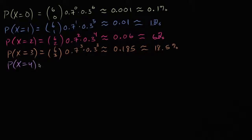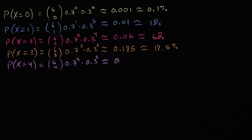The probability that our random variable is equal to four is going to be six choose four, times 0.7 to the fourth power, times 0.3 to the second power, which is approximately 0.324 — so about a 32.4% chance of making exactly four out of the six free throws. Alright, two more to go.